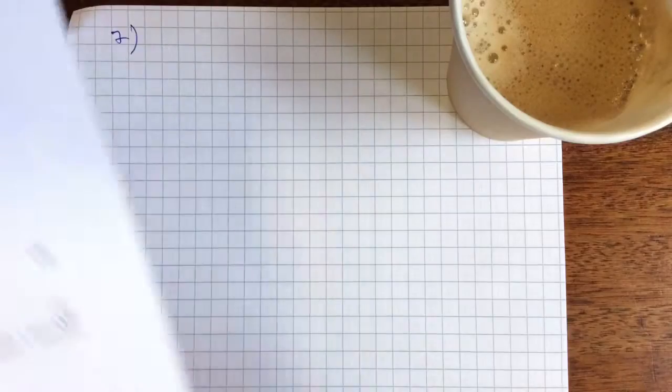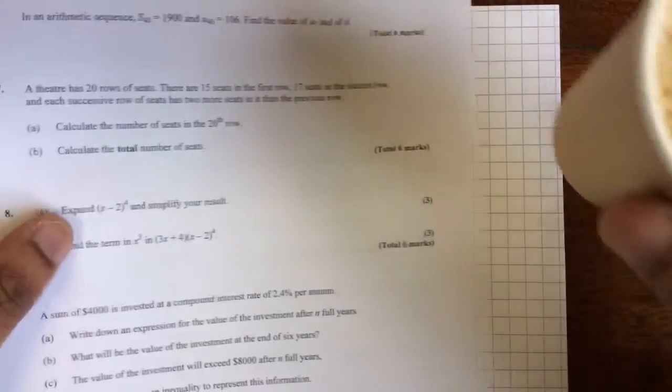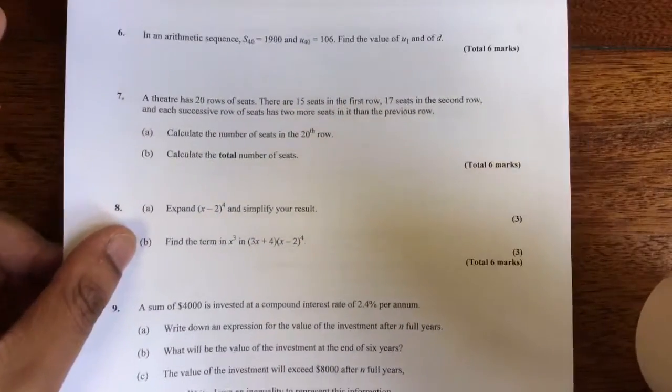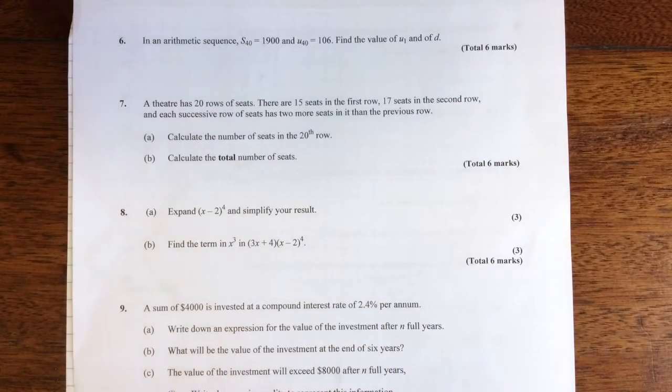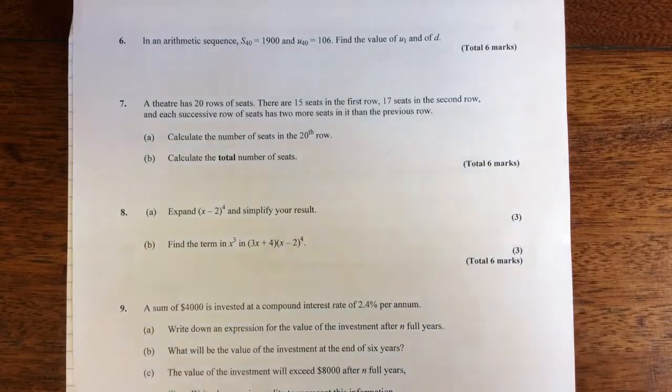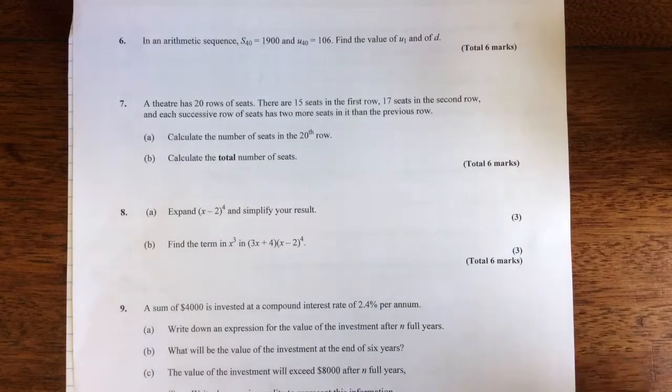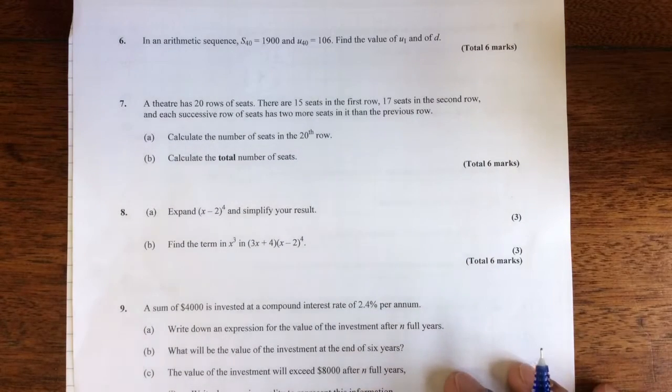We're back and we've got question 7 next. Question 7: A theatre has 20 rows of seats. There are 15 seats in the first row, 17 in the second row, and each successive row of seats has 2 more seats than the previous row.